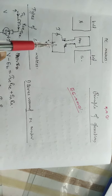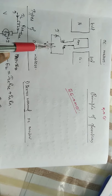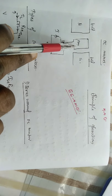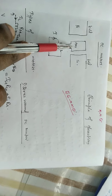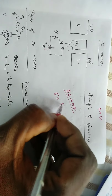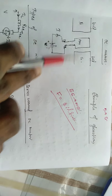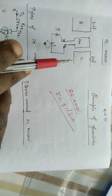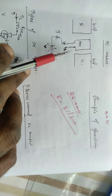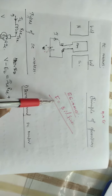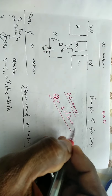A current-carrying conductor placed in a magnetic field experiences a force. This force is given by F = BIL sin theta, where B is the magnetic field strength, I is the current, L is the conductor length, and theta is the orientation angle of the coil with respect to the reference.